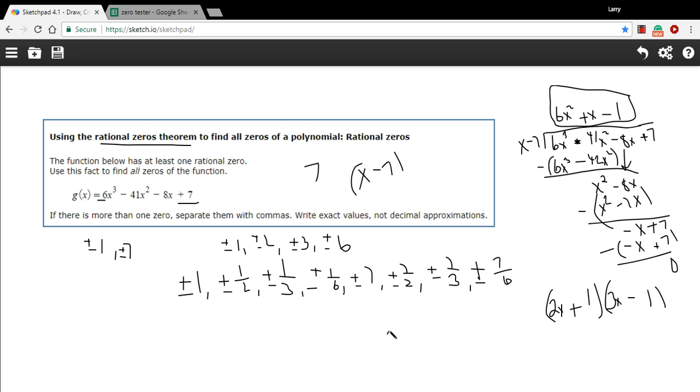Let's set each of those equal to 0 and solve. So 2X plus 1 equals 0. We would subtract 1 and then divide by 2. And we're going to get X equals negative 1 half. And this one, if you do the same thing, we would add 1 and divide by 3. You're going to get X equals positive 1 third. So we have found all of our zeros. We have negative 1 half. We have 1 third. And we have 7.